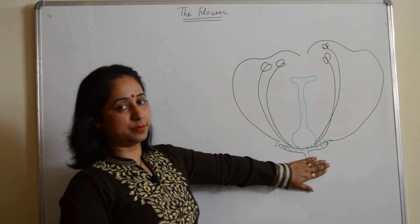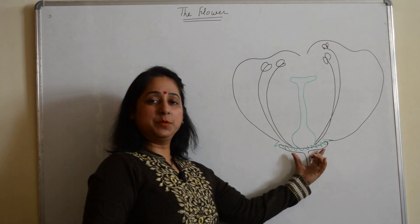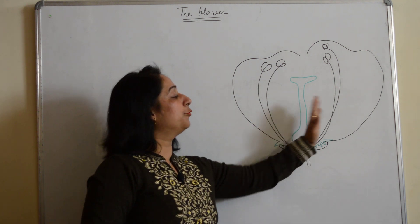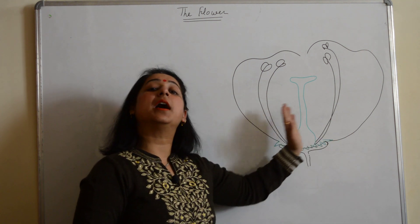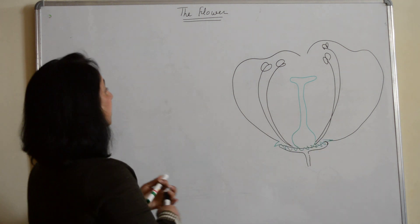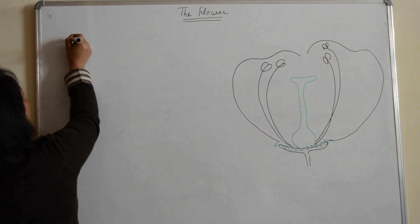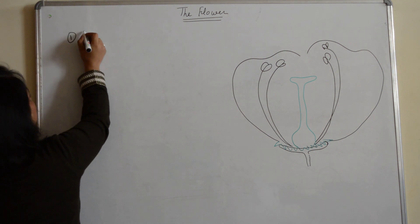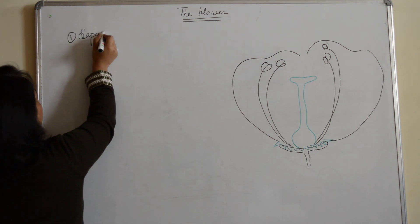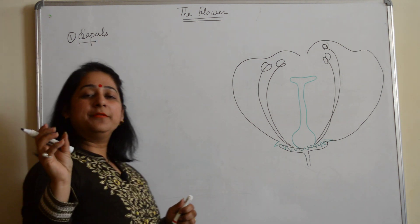Starting with the stalk — the stalk is the part from where the flower is attached to the branch. Then we have the receptacle or thalamus, where the four different whorls are arranged over it. Starting off with the first whorl, that is the sepals.